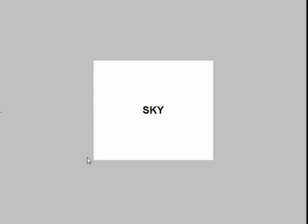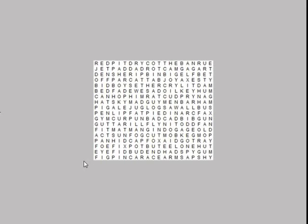Let's have a practice first, shall we? Here is the word that you have to find: Sky. Here is the box of letters. Try and find the word sky as fast as you can. When you've found the word, use the mouse and click on the word so it turns yellow.